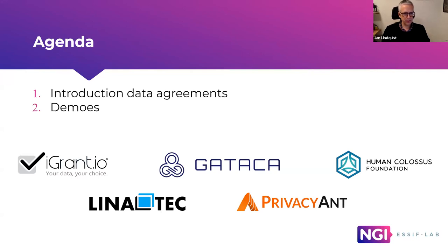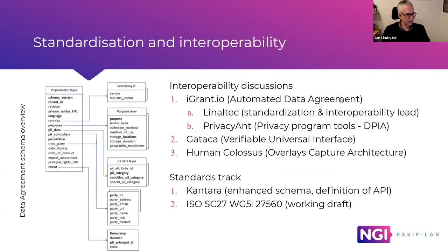Welcome to this call. What we have done here is set up our first demo from the work done in NGI ESIF labs, and we're excited to describe what we have done in this project. Basically, there are three projects involved: one with iGrant and automated data agreements, collaborating with NLTEC, which I'm representing, working with standards interoperability lead, together also with Privacy Ant, which has privacy program tools and performs DPIA reports, and we're going to show the connection there.